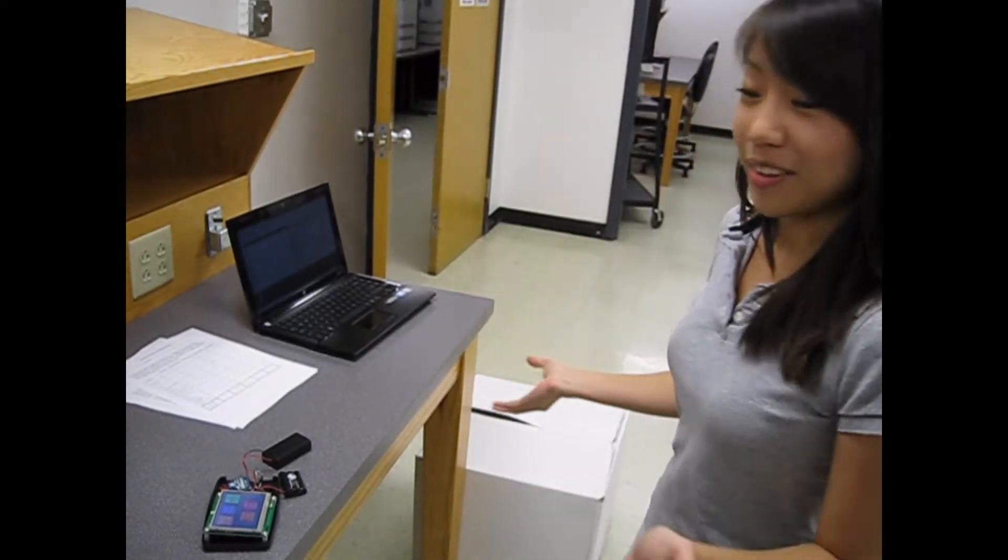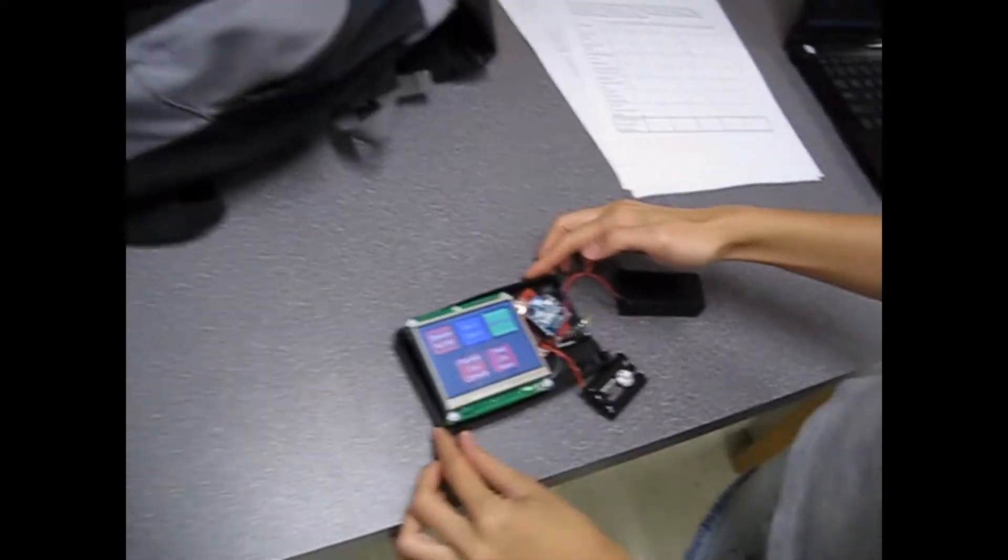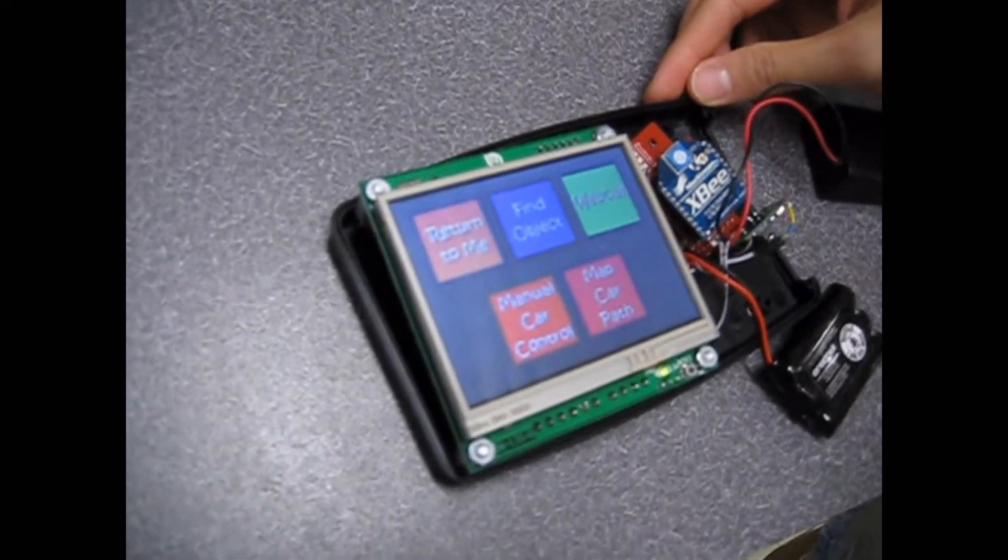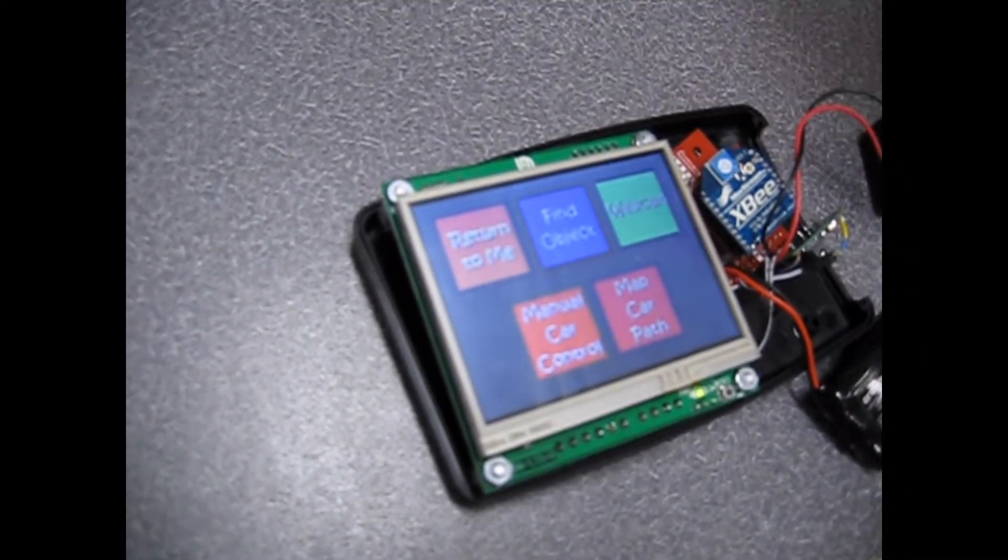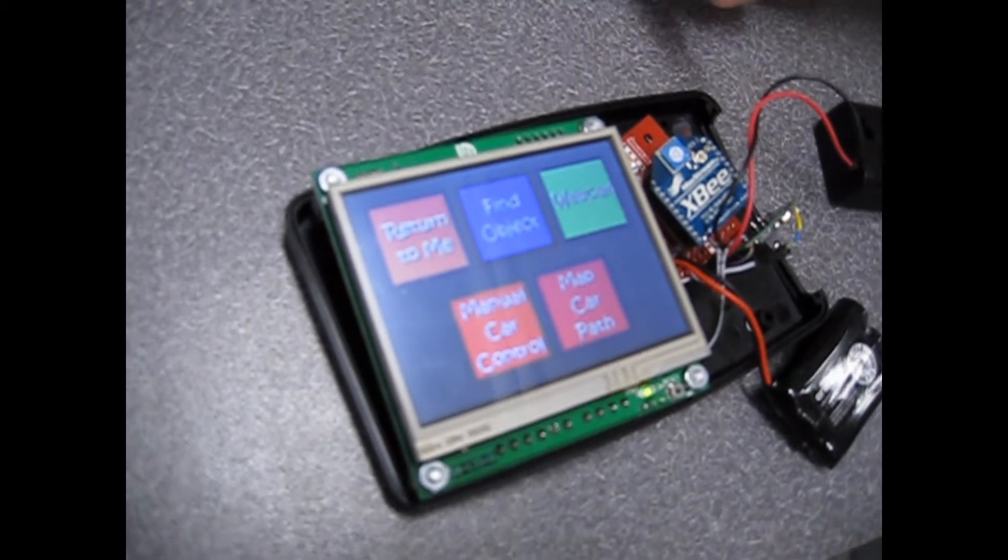So I'll give you a little demo of how this works. As you can see, the controller has a touchscreen GUI that was built using the Stellaris graphics library with five different commands for the car.